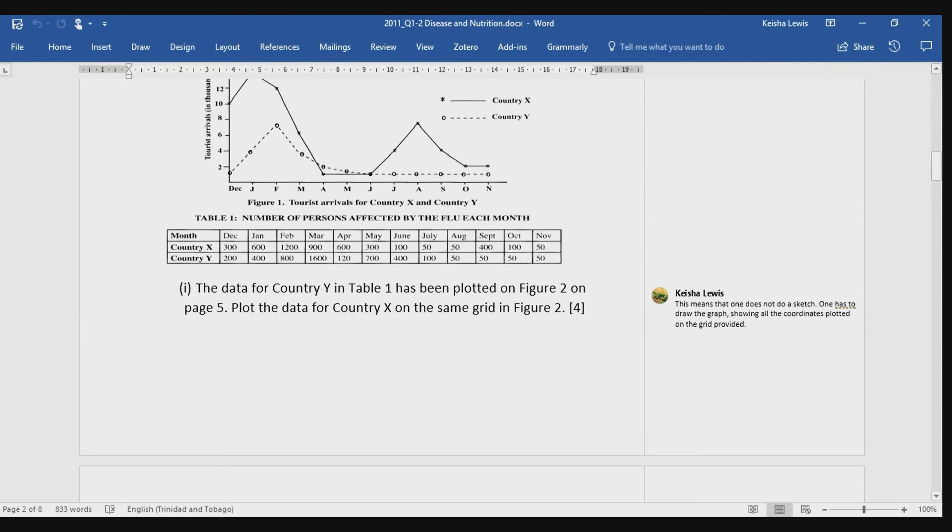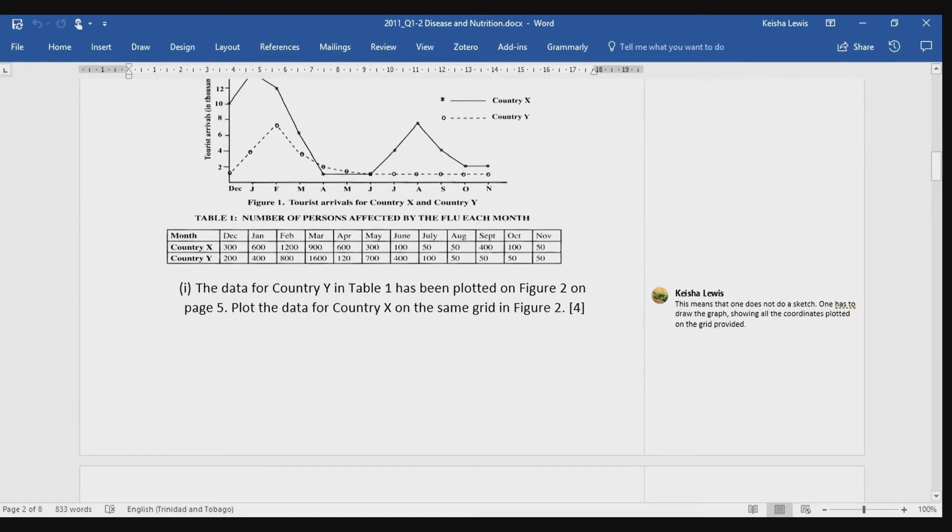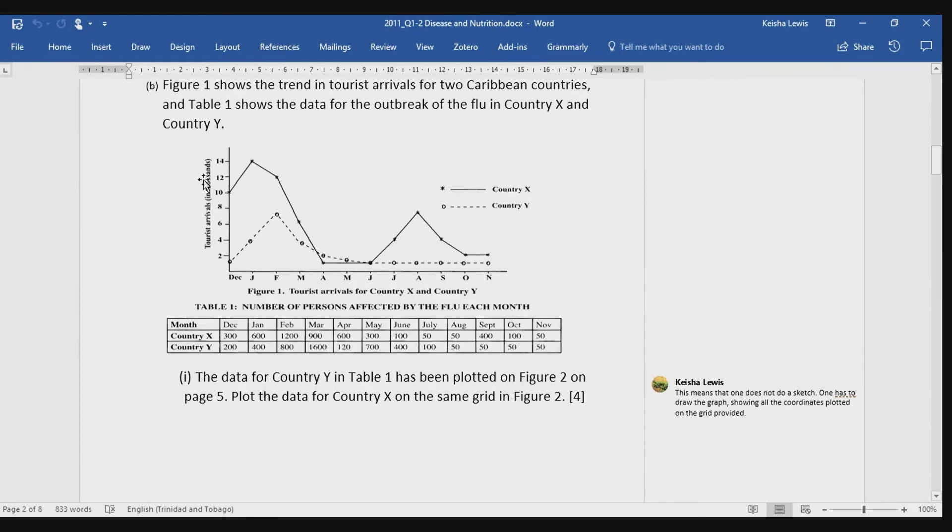Now, when we look at the question that follows, it is telling us that the data for country Y has already been plotted on a grid on another page. And what it is now asking us to do is to plot the data for country X on the same grid that has been provided. So, of course, already you're now assuming that you're going to end up with a graph that looks something like this, where you have two lines on the same grid. As well, you will then also assume that the scale will be the same for the Y and X axis. Y vertical, X horizontal.